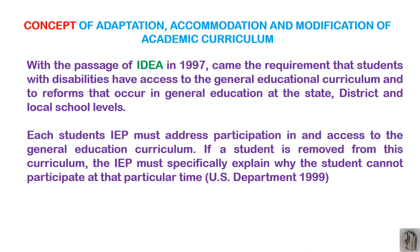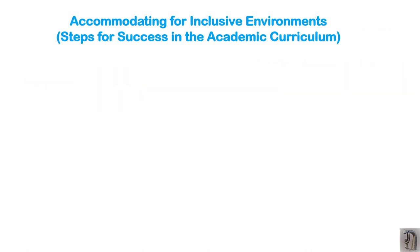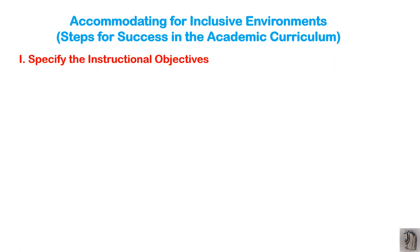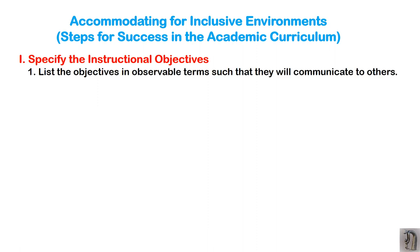Now let us see accommodating for an inclusive environment — what steps you have to take to successfully adapt the academic curriculum. First, specify the instructional objectives. Unless you specify your instructional objectives very clearly, you cannot plan the accommodation, modification, or adaptation for that particular child. List objectives in observable terms so that anyone can understand them and communicate with each other.